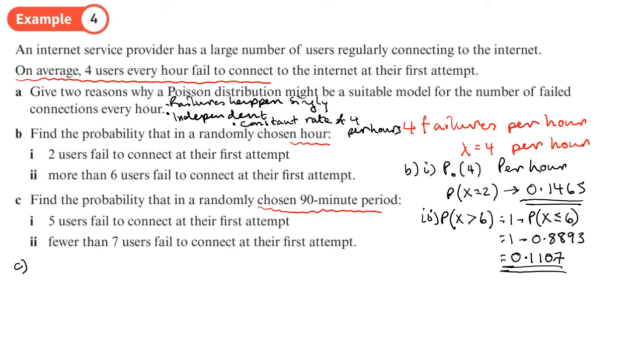So that gives me 0.1107. And then part c, find a probability in a randomly chosen, all right can you see now it says a 90 minute period? Right, now if there's four failures per hour, in one and a half hours there's going to be four times one point five, six failures.